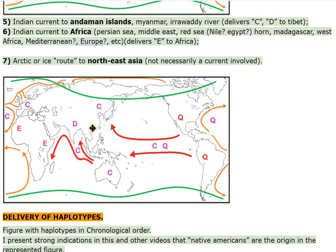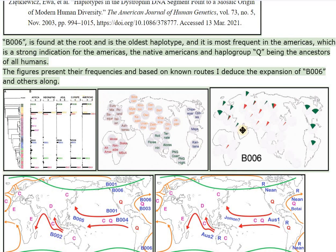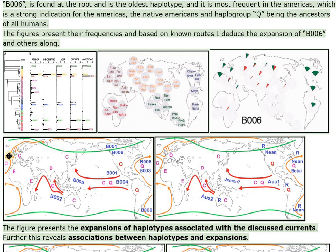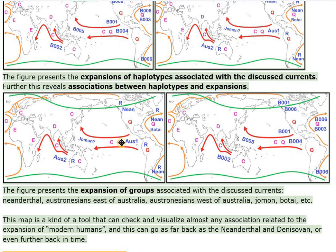I present strong indications in this and other videos that Native Americans are the origin as represented in the figure. B006 is found at the root and is the oldest haplotype, and it is most frequent in the Americas — which is a strong indication for the Americas, the Native Americans, and haplogroup Q being the ancestors of all humans. The figures present their frequencies and, based on known roots, I deduce the expansion of B006 and others. The figures also present the expansions of haplotypes and groups associated with the discussed currents, revealing associations between haplotypes and expansions.